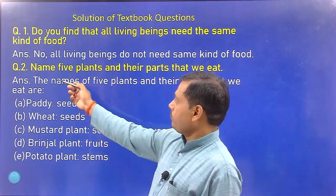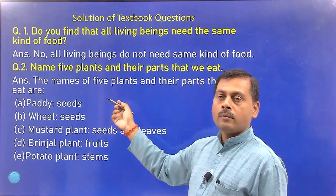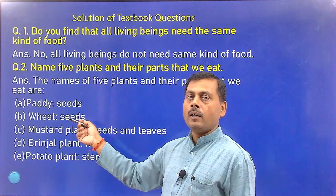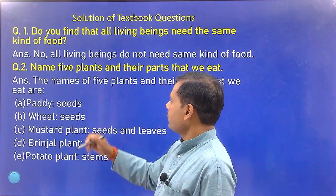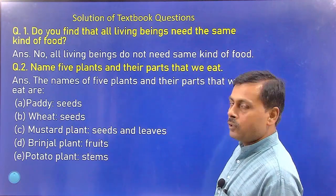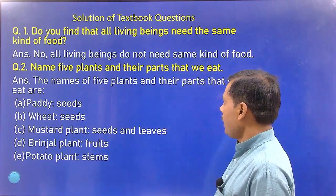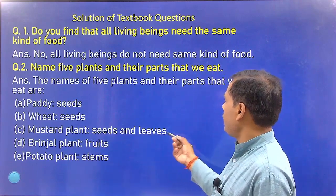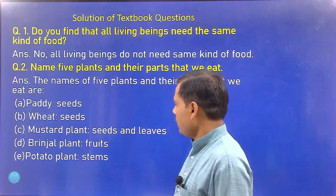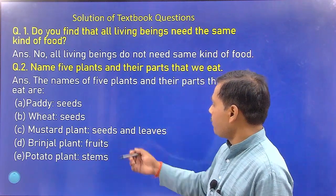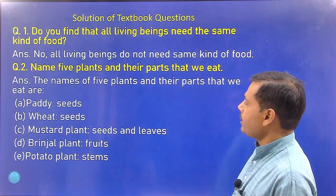The second question: Name 5 plants and their parts that we eat. This will be made by you in the exercise tables. Here — paddy: seeds of paddy are used as food. Wheat: seeds of wheat are also used as food. Mustard plant: seeds and leaves are used. Brinjal: fruits are used. Potato plant: stems are used as food.